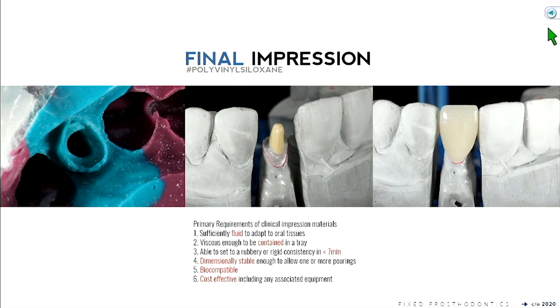There are a few key properties for an impression material. First, it needs to be sufficiently fluid to adapt to the oral tissues — we want it to flow into all the nooks and crannies. But it's also got to be viscous enough to be contained in a tray, because if it's too runny, it will all flow out and you won't have anything left. So you're balancing those two aspects.